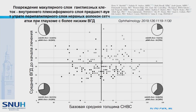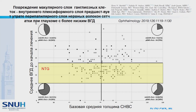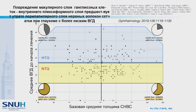Recently, researchers from Australia showed a very interesting paper. In normal tension glaucoma, the change in GC-IPL was earlier than RNFL change. This means in normal tension glaucoma, you can detect earlier change in GC-IPL compared to retinal fiber layer thickness compared to high tension glaucoma. This is quite similar to our own result from South Korea, where most primary open-angle glaucoma patients are normal tension glaucoma.